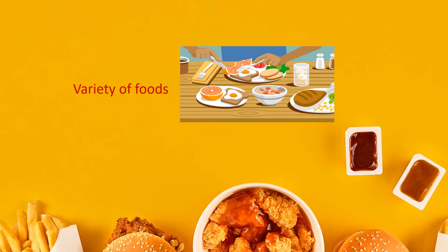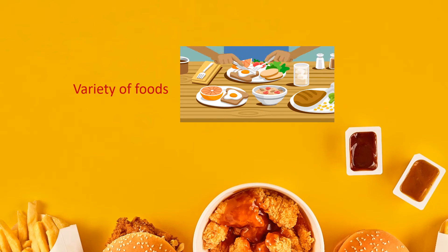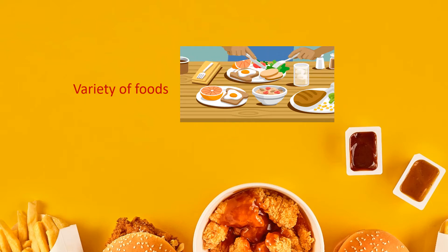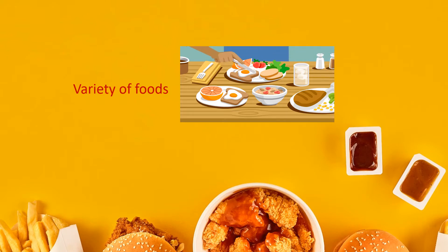We have also discussed that our food preference varies with seasons. In summers, we would like to eat something cold, like ice creams, fresh fruit juices, coconut water, etc. On the other hand, in winters, we would like to eat hot coffee, hot tea, soups, gajar ka halwa, garma garam jalebies, etc.